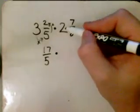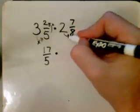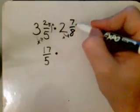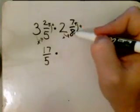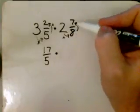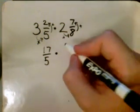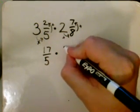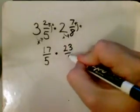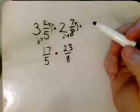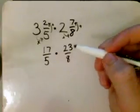You want to do the same thing with this, so you want to multiply, and then you want to add. So 2 times 8 is 16. 16 plus 7 is 23. So it would be 23 over 8.